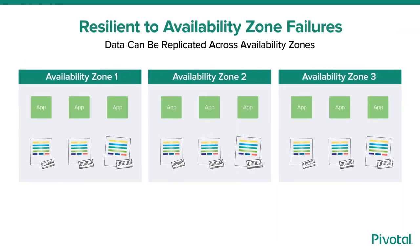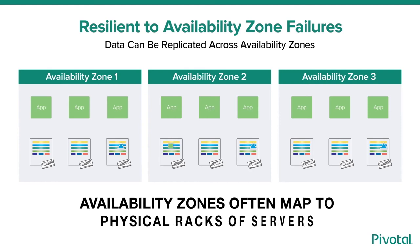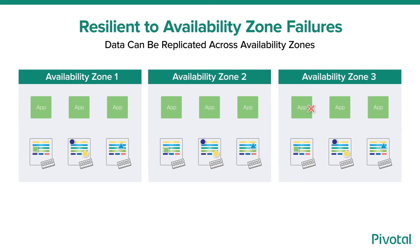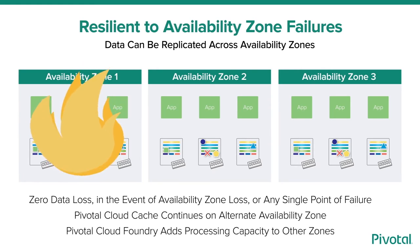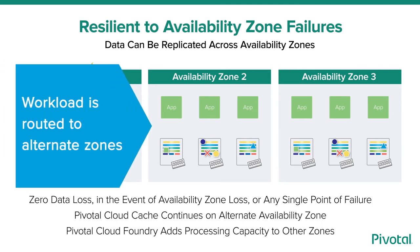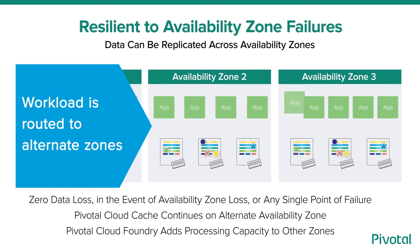The same concept is applied to maintaining availability when availability zones fail. Availability zones often map to physical racks of servers. Data is replicated across these availability zones to provide an alternate path for accessing data in the event of a failure that impacts an entire availability zone. Similar to server failures, data is rebalanced after an availability zone failure. Pivotal Cloud Foundry recovers by starting new instances of the lost microservices in the surviving availability zones. Availability zones can be impacted by far-reaching failures like the loss of a rack's power supply or a network partition.